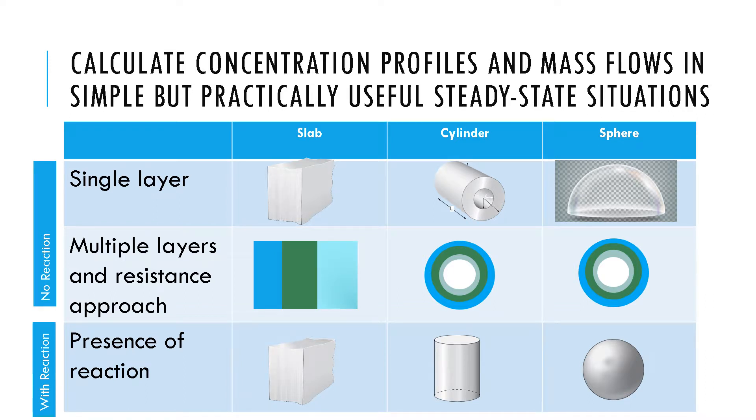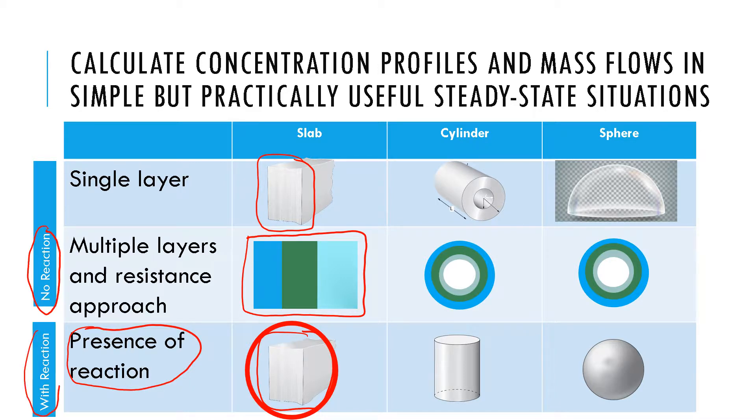Okay, so we have done steady diffusion through a single layer like a slab, then we did multiple layers, but in both of those situations there was no reaction present. We now want to do a single layer but in presence of reaction, with reaction where the diffusing species is also being consumed or there is more of it being generated.